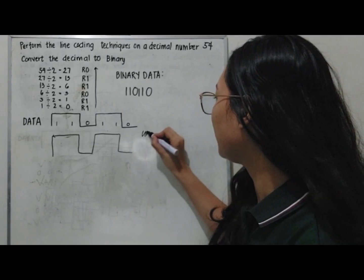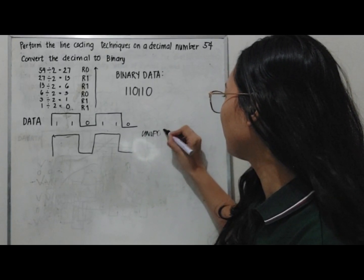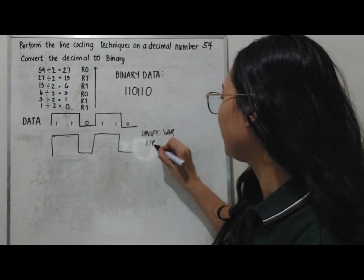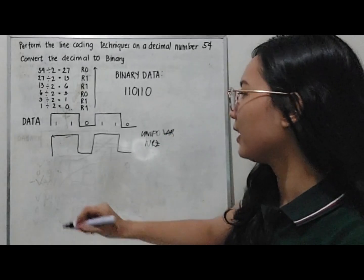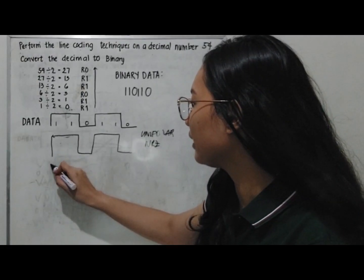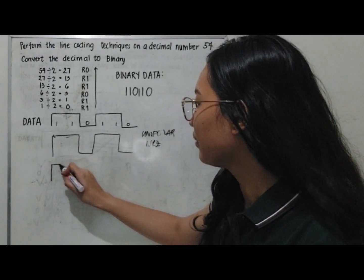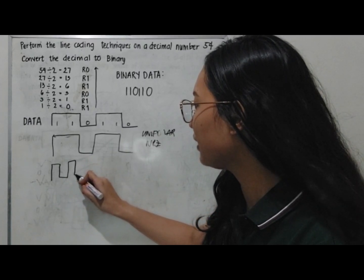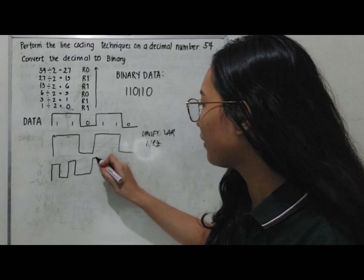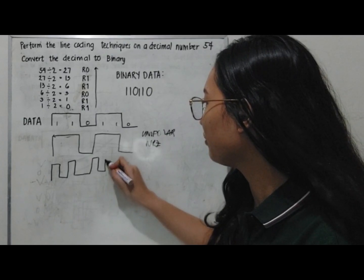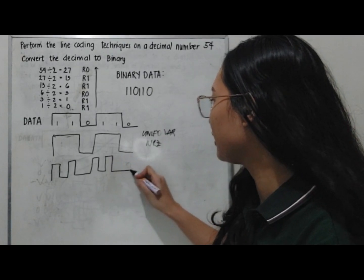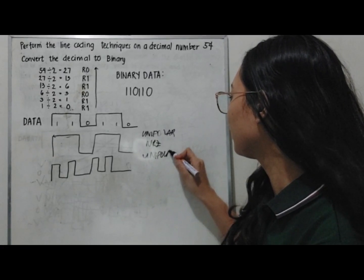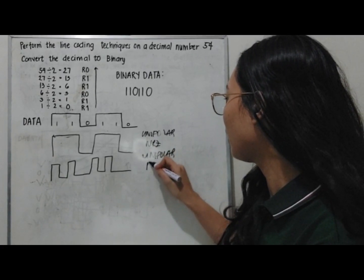For the unipolar RZ of decimal 54: positive half bit, then positive half bit, then zero, then positive half bit, zero, positive half bit, zero, zero. This is the unipolar RZ waveform.